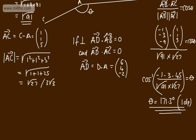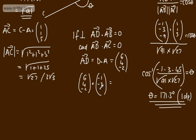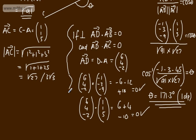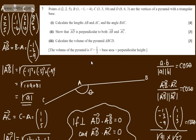Let's check: AD · AB = (6, 4, -2) · (-1, -3, -9) = -6 - 12 + 18 = 0, therefore perpendicular. Now AD · AC = (6, 4, -2) · (1, 1, 5) = 6 + 4 - 10 = 0, therefore perpendicular. We've shown that AD is mutually perpendicular to both AB and AC by confirming the dot products are zero.